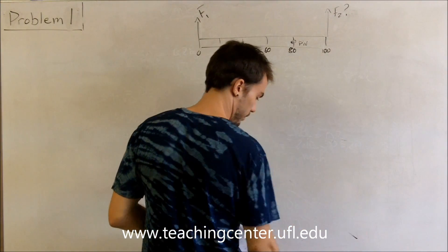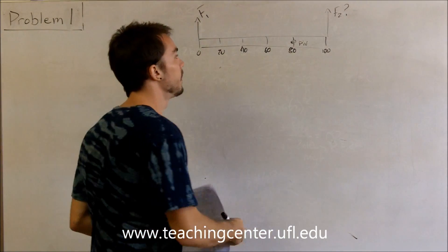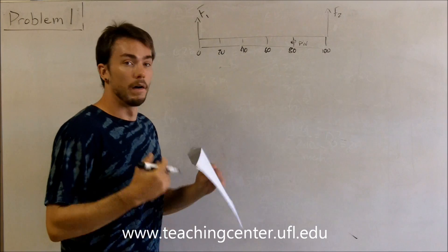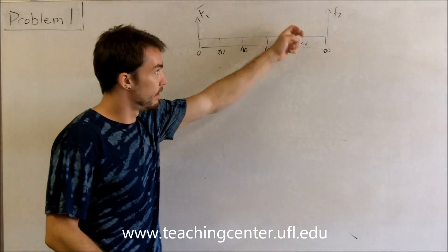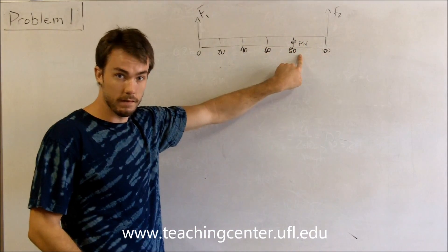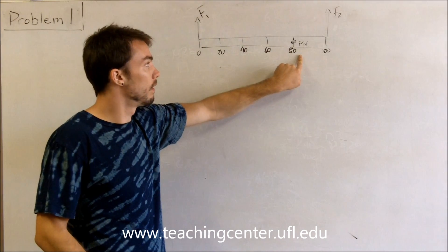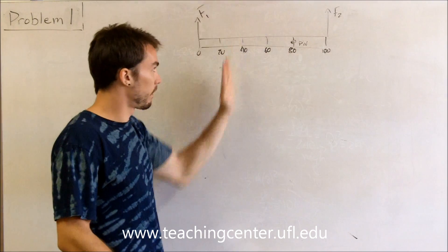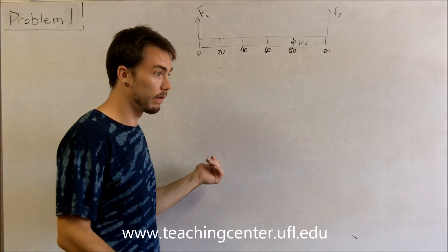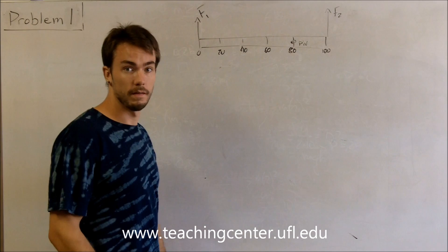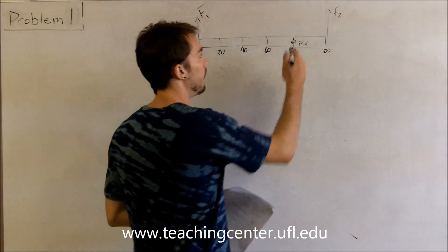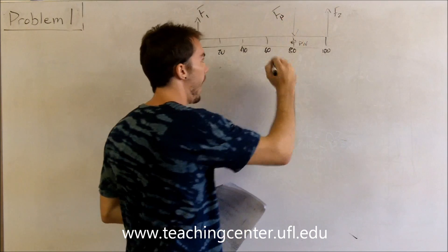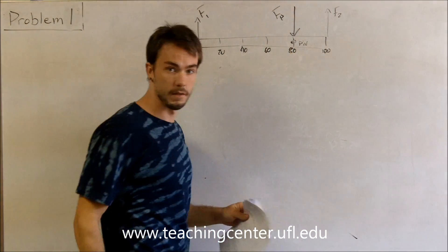Getting rid of our wrong choice for F2, we know F2 points upwards. Now for the force due to the pivot at 80 centimeters: if it's in static equilibrium, the sum of forces on this axis has to equal zero. If all forces point in the same direction, that can never happen. Therefore, the force due to the pivot has to point downwards — there's no other option.